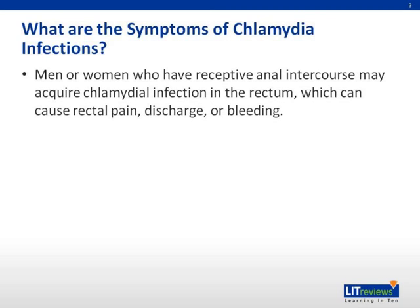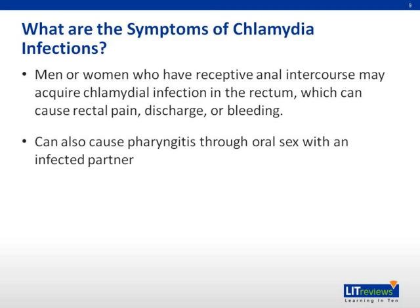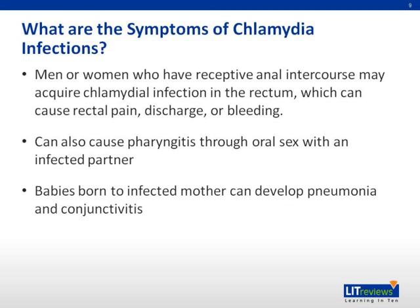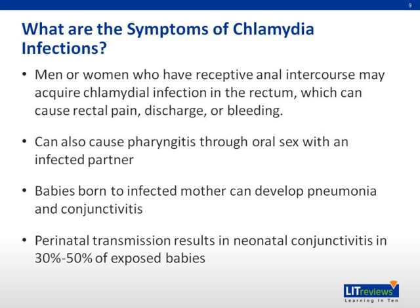Men or women who have receptive anal intercourse may acquire chlamydia infection in the rectum, which can lead to rectal pain, discharge, or bleeding. It can also cause pharyngitis through oral sex with an infected partner. Babies born to infected mothers can develop pneumonia and inclusion conjunctivitis. Perinatal transmission results in neonatal conjunctivitis in 30% to 50% of exposed babies.